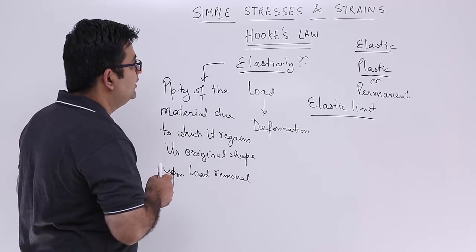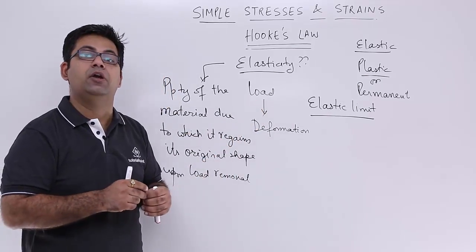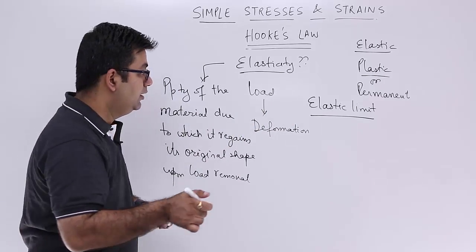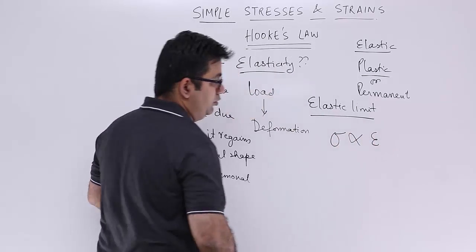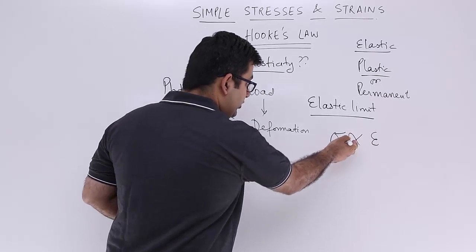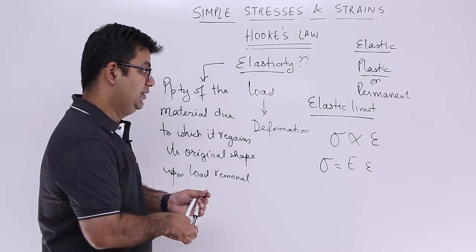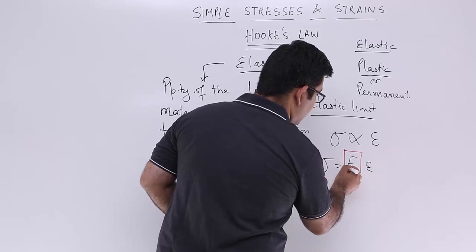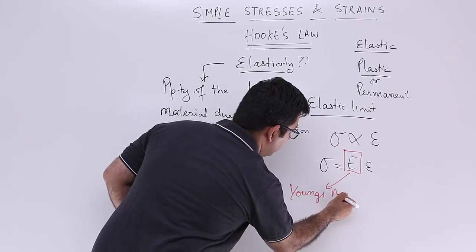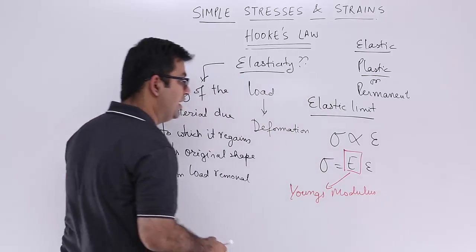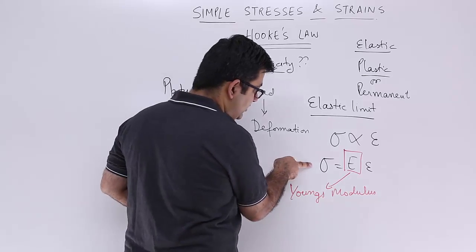By Hooke's law, we state that if your body is loaded within the elastic limit — that is, we are not going into the permanent deformation stage — then the stress produced is proportional to the strain. If you remove this proportionality sign, you get a constant of proportionality, which is capital E. This capital E is called Young's modulus, or the modulus of elasticity.